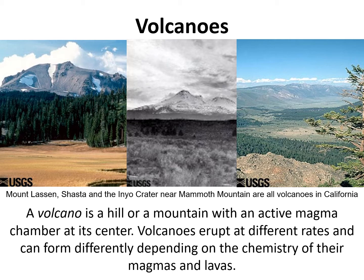Volcanoes that have a completely solidified magma chamber — where the magma chamber has completely developed into an intrusive rock like granite — are considered extinct. In that case, they don't erupt at all; they stop erupting altogether, and the volcano essentially becomes a mountain at that point.